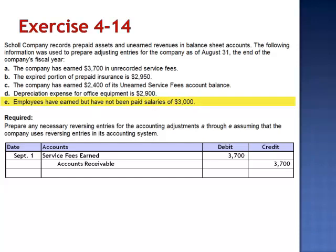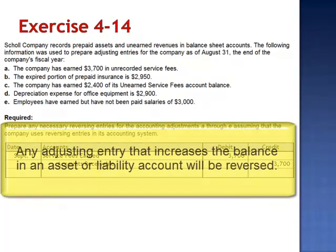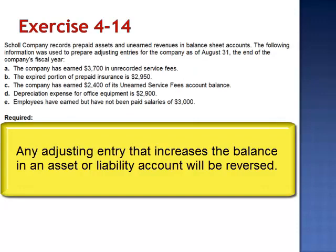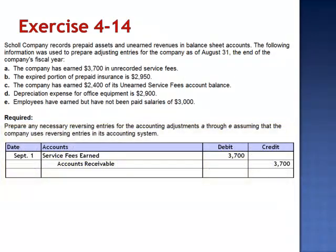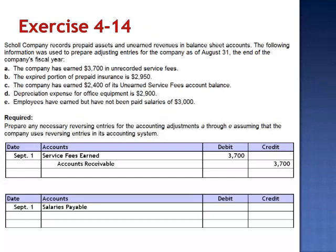Letter E: employees have earned but have not been paid salaries of $3,000. The August 31st adjusting entry is a debit to salaries expense and a credit to salaries payable, increasing the liability as of August 31st. Since this adjustment increased the balance in a balance sheet account — salaries payable — it will be reversed on September 1st. The reversing entry is a debit to salaries payable, $3,000, and a credit to salaries expense.